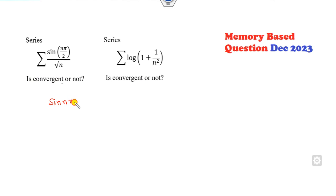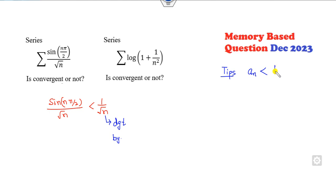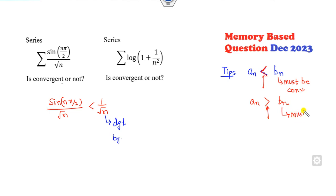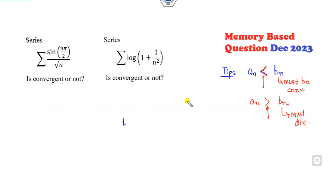Some students asked: can I take aₙ < 1/n, which is divergent by the p-test? Always remember: whenever you use aₙ < bₙ with the less-than sign, bₙ must be convergent — only then can you apply the comparison test. If you use aₙ > bₙ with the greater-than sign, then bₙ must be divergent. You considered the less-than sign, but 1/n is not convergent, so you cannot write it that way. For example, we know this term is less than that — if we consider this series is divergent, the less-than sign tells us nothing.